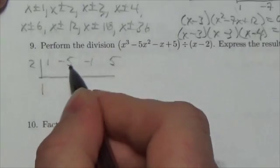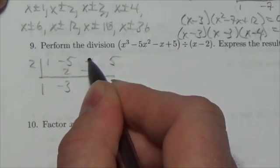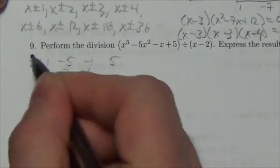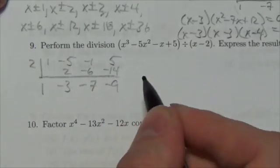So bring down the 1, multiply, add, multiply, add, multiply, and add, and we get negative 9.